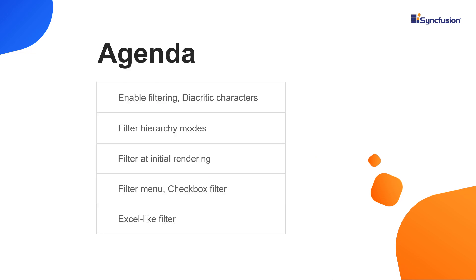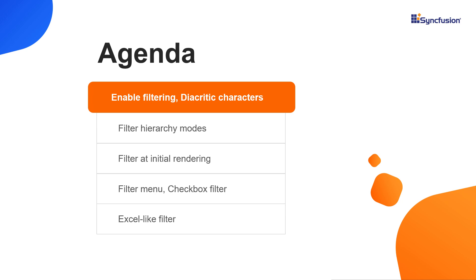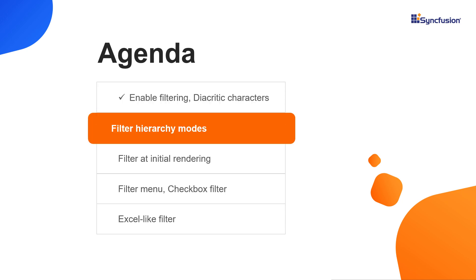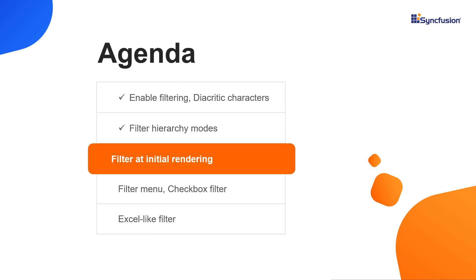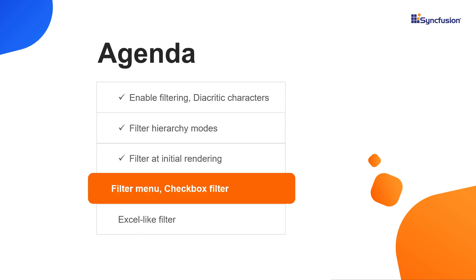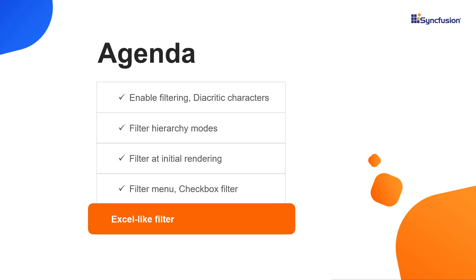In this video, I will show you how to enable filtering, consider diacritic characters while filtering, use filter hierarchy modes and filter operators, and filter at initial rendering. I will also show you the advanced filter types available on Angular TreeGrid like the filter menu, checkbox filter, and Excel-like filter.